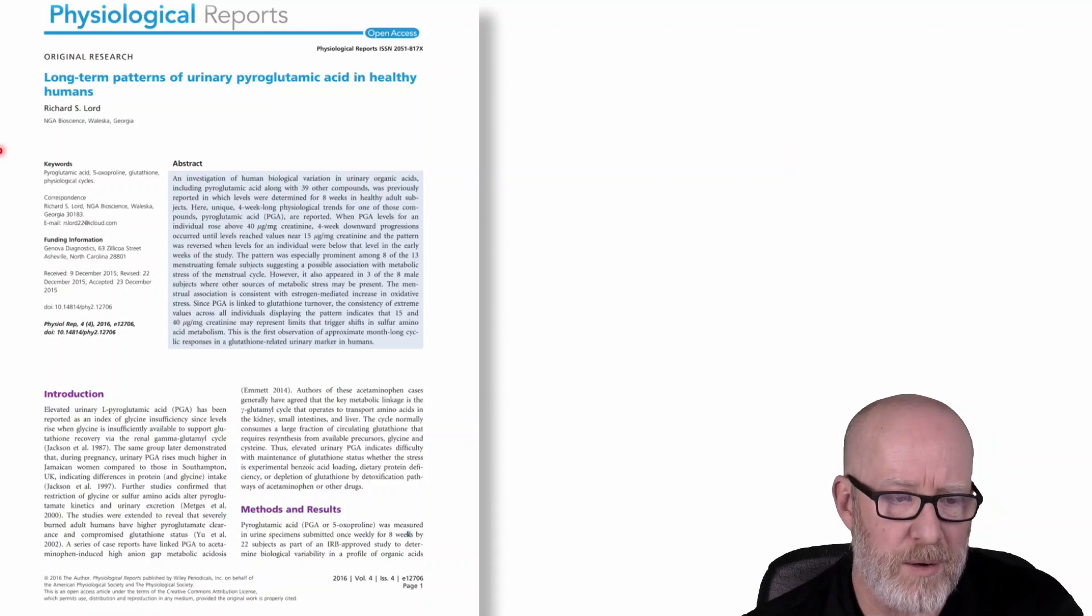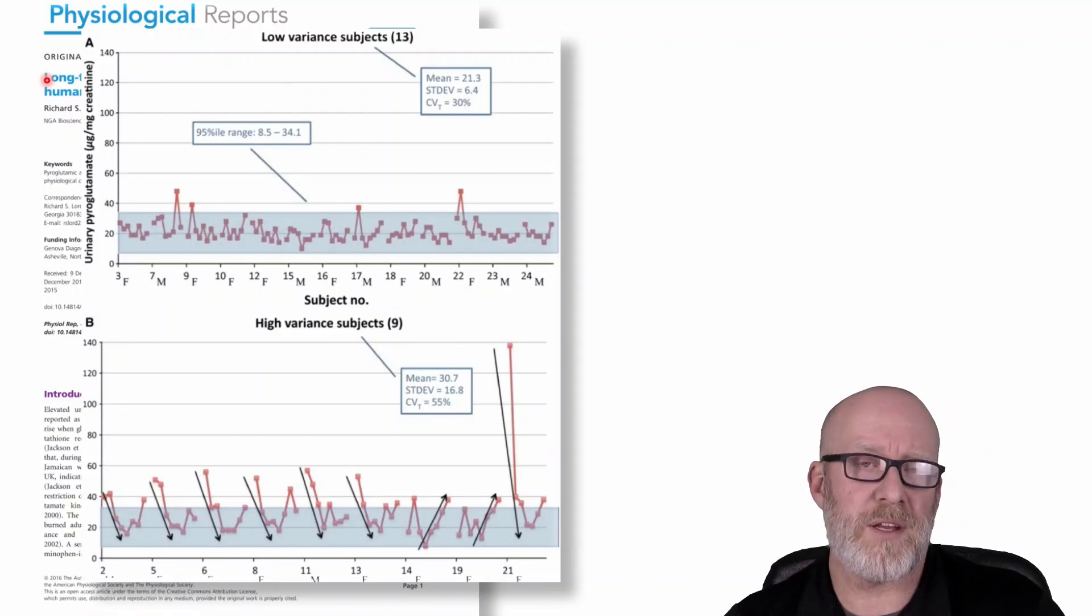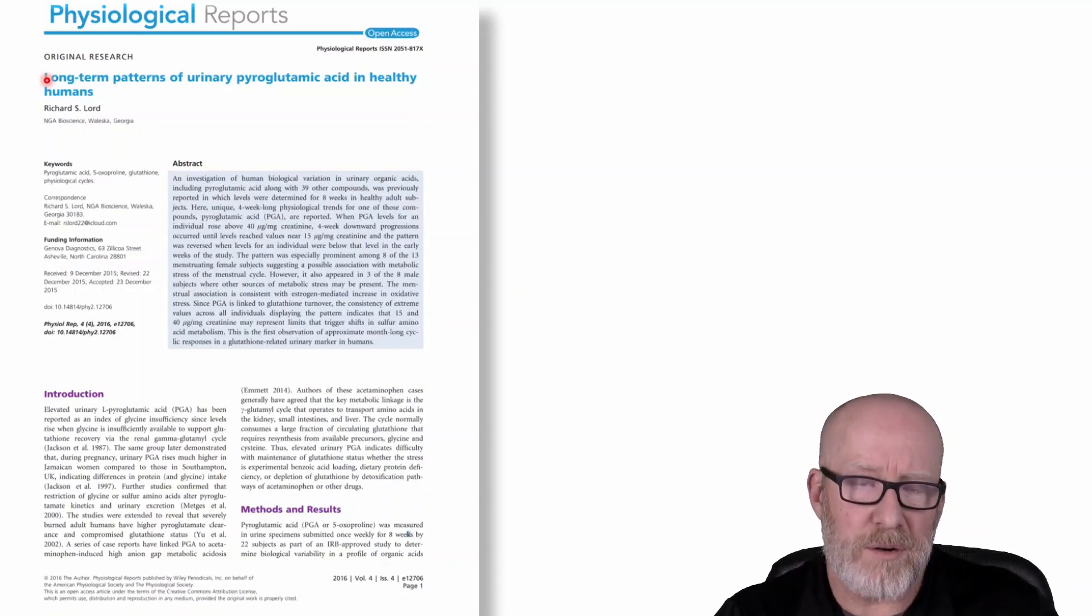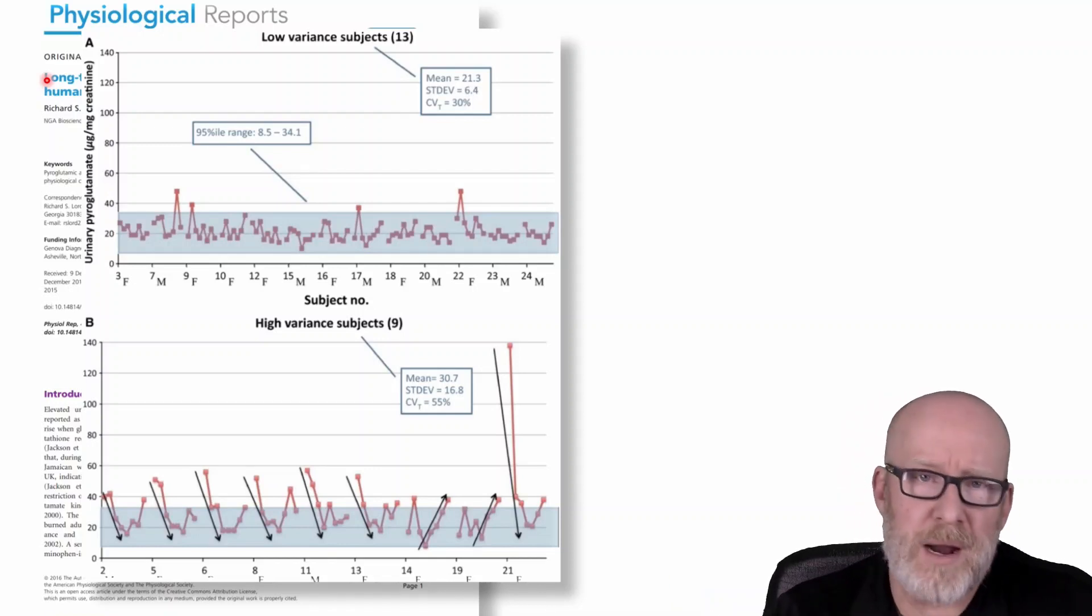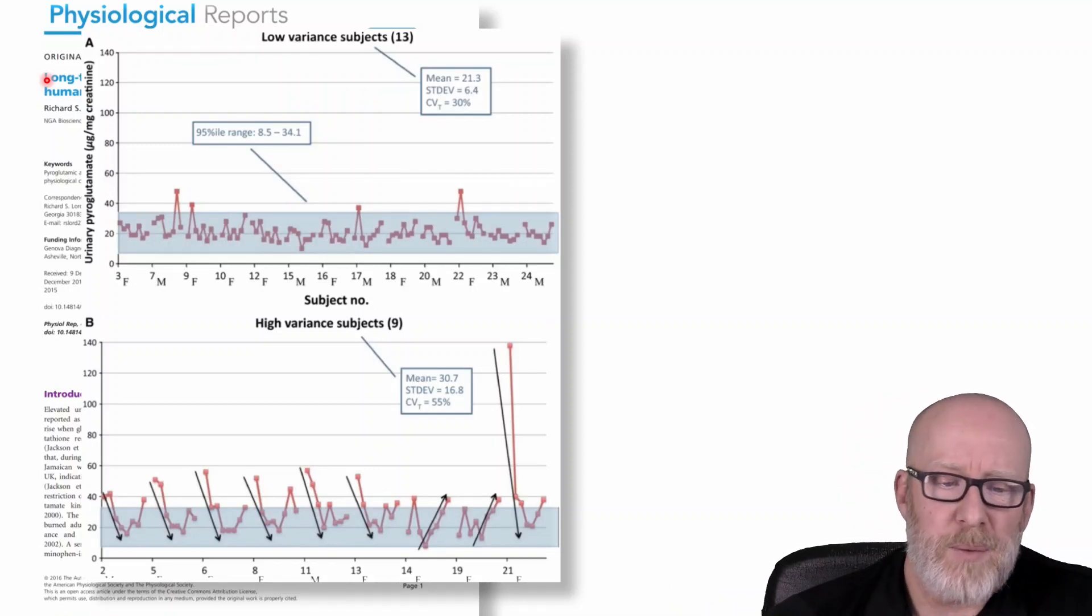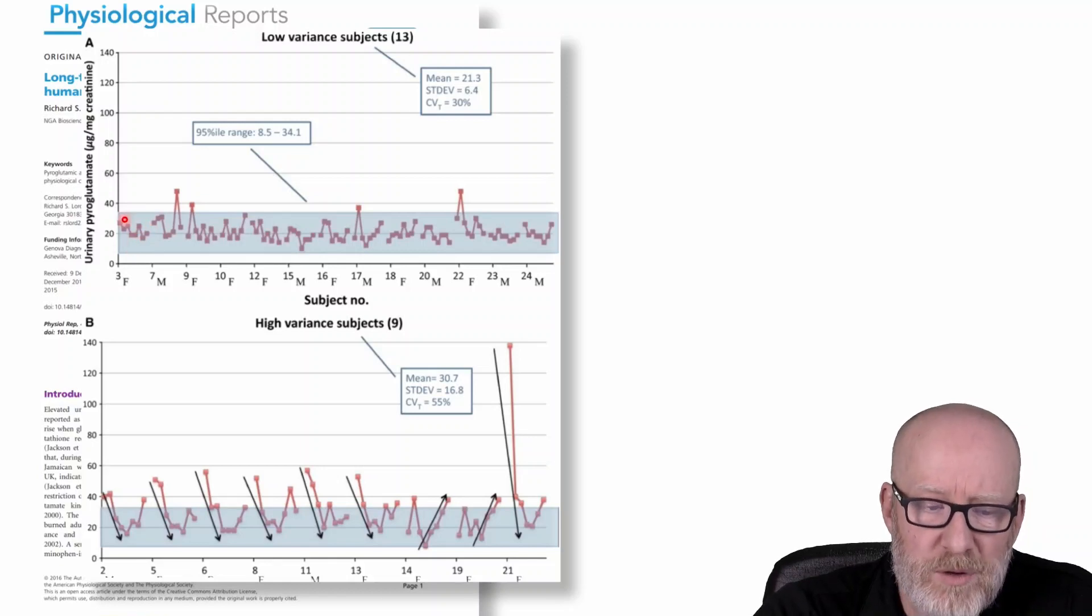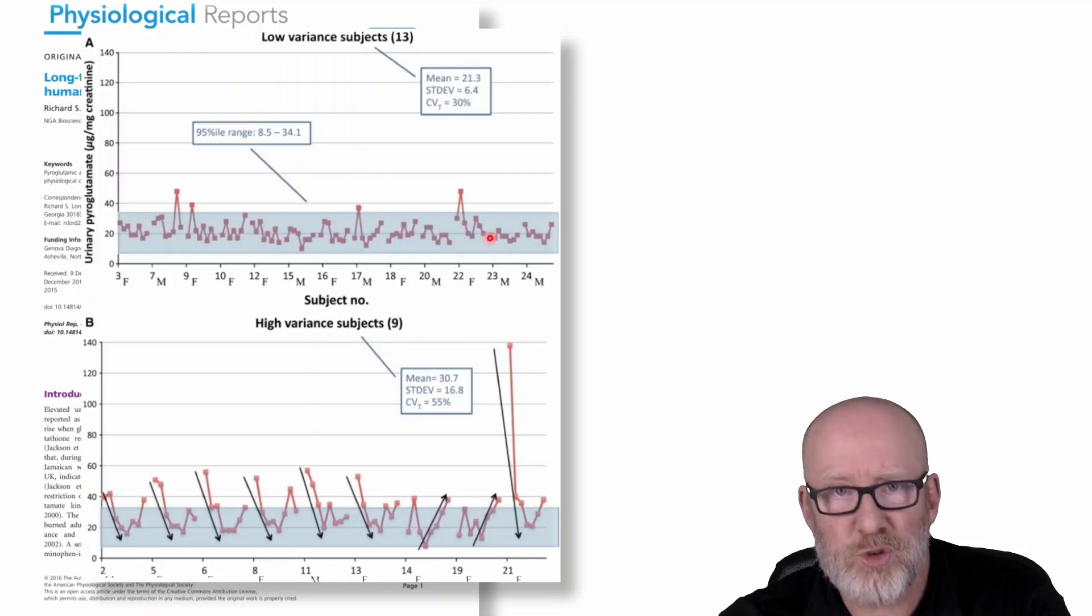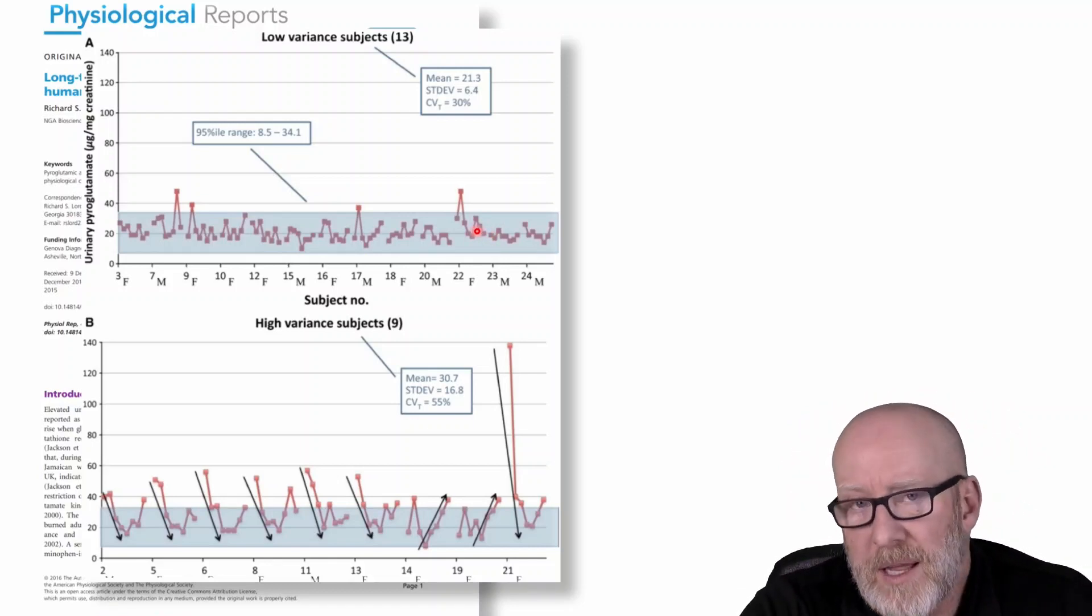But here's the big problem. Now this was a paper that was published a while ago. This guy used to own a lab that did organic acid testing. They used people and they tracked it, if you look at the title, long-term patterns. Four weeks, they tested healthy individuals' pyroglutamic acid levels. And what I want to show you is very interesting here, that there were some people that had, over the course of four weeks, a pretty tight, consistent sort of trait-like effect of pyroglutamate and therefore maybe glycine.